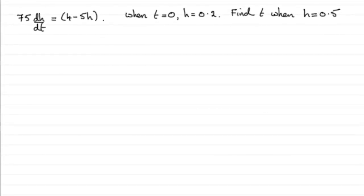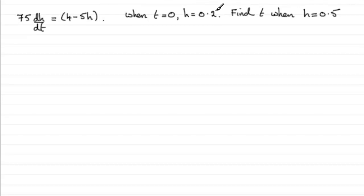Now this last part, we've basically got to solve a differential equation. We've got the equation 75 dh/dt equals 4 minus 5h, and we're told that when t equals 0, h is 0.2, and we've got to find the value of t when h is 0.5.